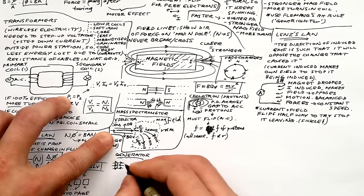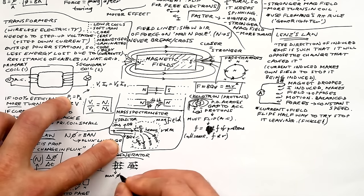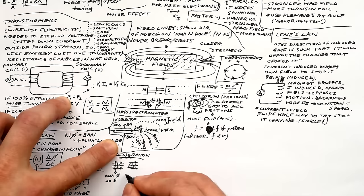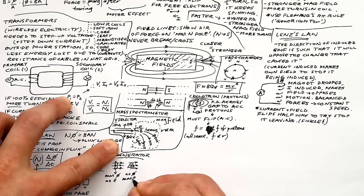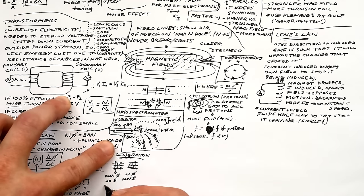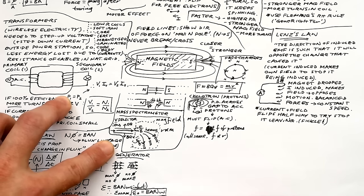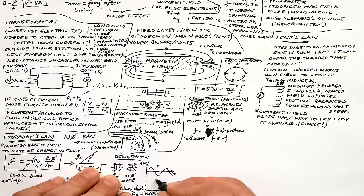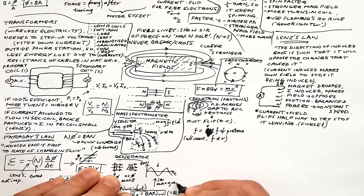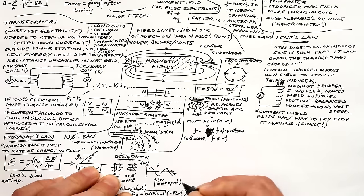In a dynamo or generator: when the coil is perpendicular to field lines we have maximum flux but no EMF; when the coil is in line with the field we have no flux but maximum EMF because flux is changing at the greatest rate. EMF at any point is BAN-omega times sine(omega-t), so maximum EMF epsilon-zero equals BAN-omega, also equal to BLV. On a graph of flux linkage BAN against time, the maximum EMF equals the maximum gradient — more accurate to use the equation.